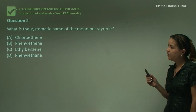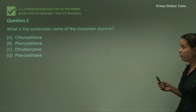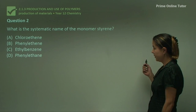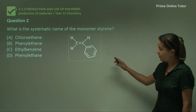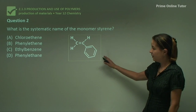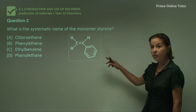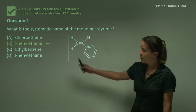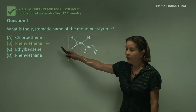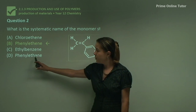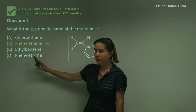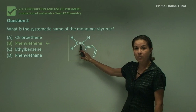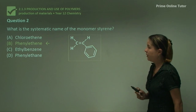Question two is quite straightforward as well. What is the systematic name of the monomer styrene? The structure of styrene, as we've learnt today, is ethene with a phenyl group. So looking at our options, it has to be phenylethene. Make sure you look at the ending — that'll tell you whether it's a double or a single bond.